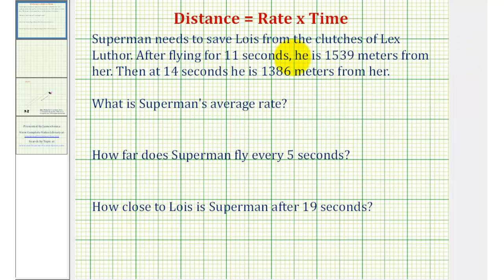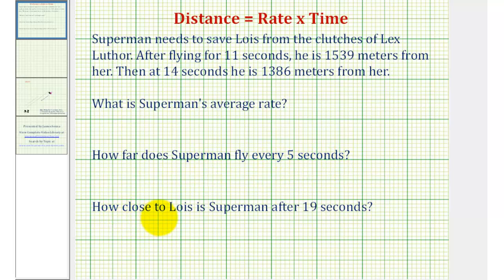Now we'll take a look at an application problem involving the distance equals rate times time formula. Superman needs to save Lois from the clutches of Lex Luthor. After flying 11 seconds, he is 1539 meters from her. Then at 14 seconds, he is 1386 meters from her. We want to know: what is Superman's average rate, how far does Superman fly every five seconds, and how close to Lois is Superman after 19 seconds.